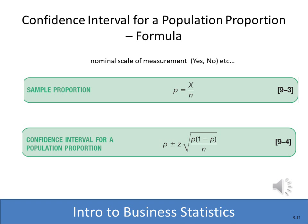The other situation we encounter is sampling proportions. A proportion uses a nominal scale — for instance, males in relation to total population, or students who passed a test. The sample proportion is x, the number in the category, divided by n, the total. The confidence interval formula for a proportion is: the proportion plus or minus z times the square root of the proportion times (1 minus the proportion) divided by n.